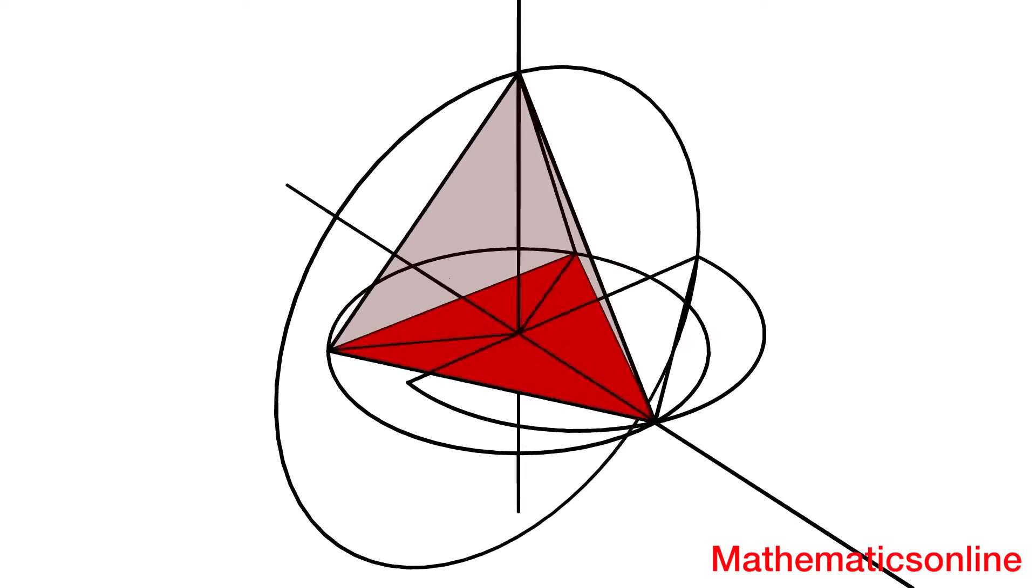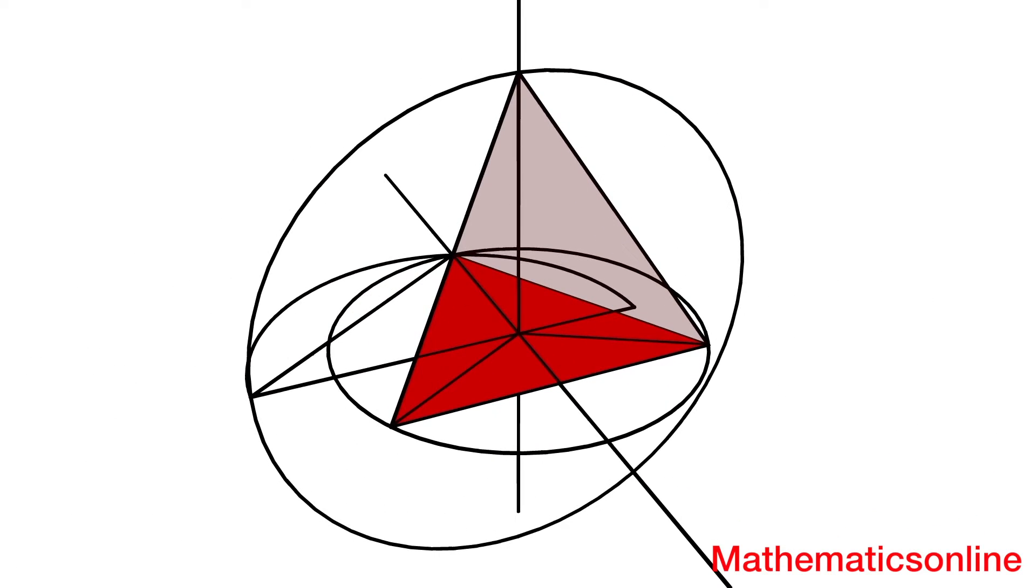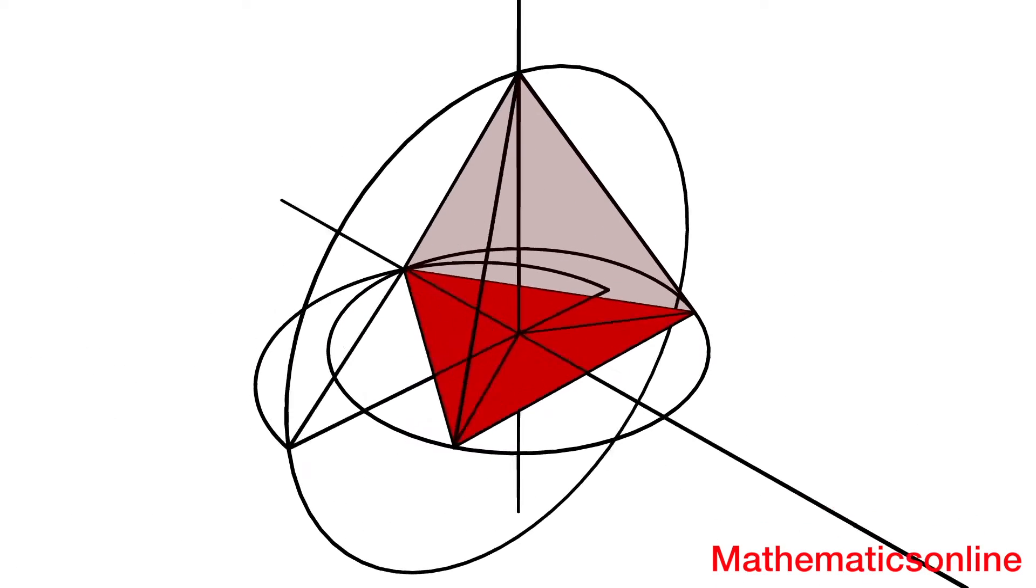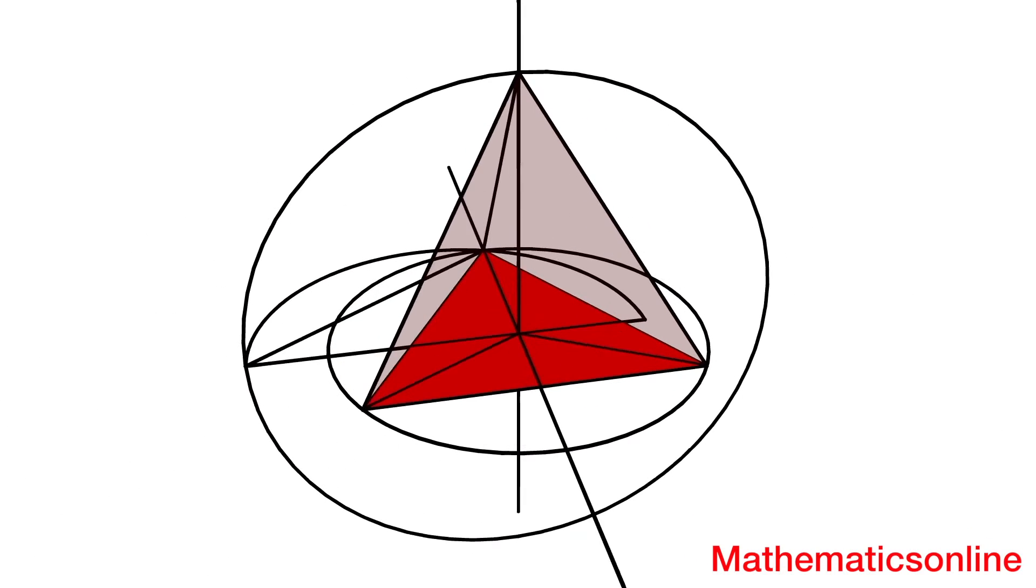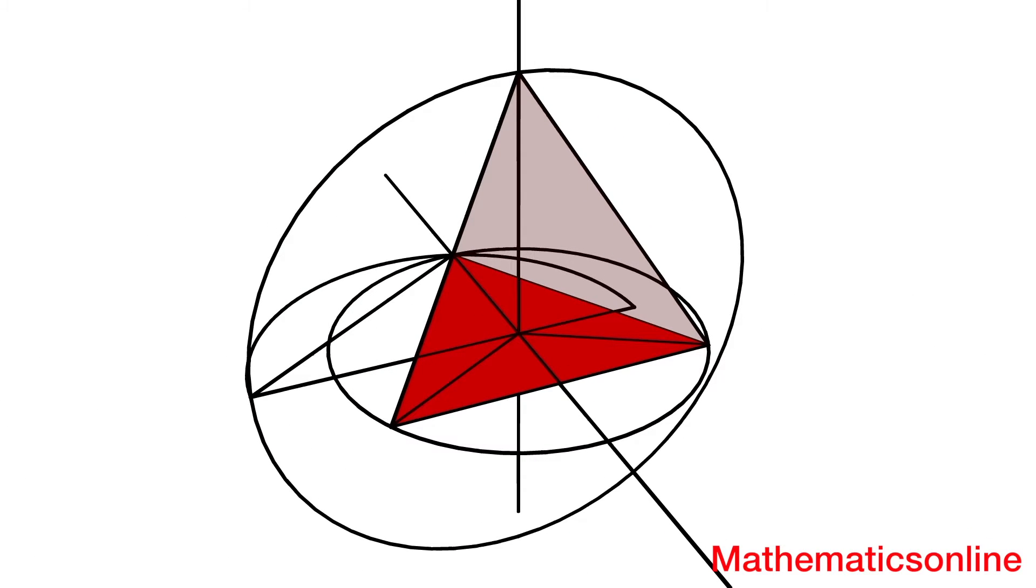Euclid's proof comes in two parts. First is the construction and then the proof. In a previous video I went over the details of the construction, and in this video we will focus on the proof.